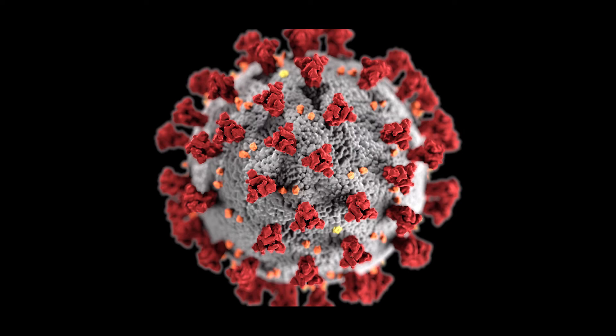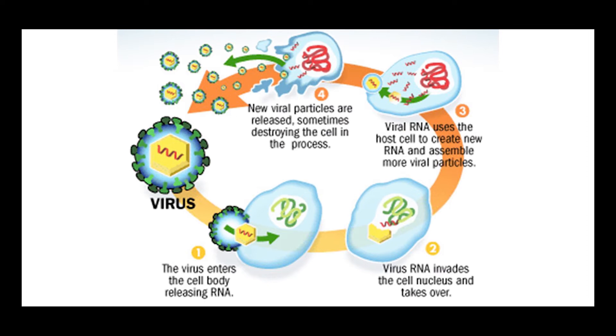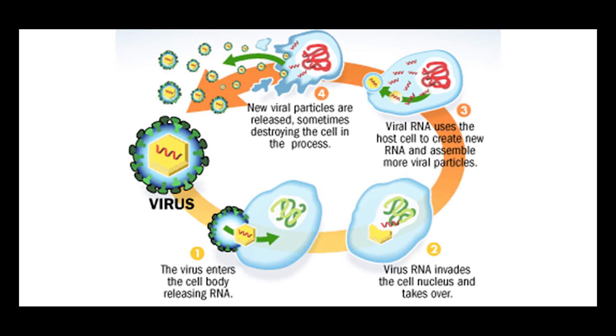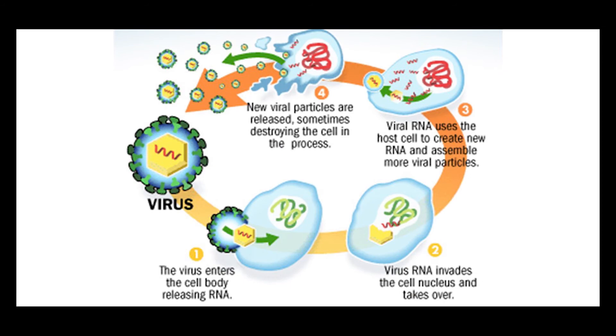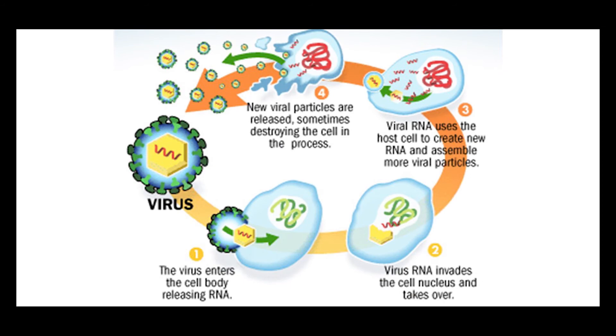Viruses like the SARS-CoV-2, which causes COVID-19, have surface proteins that help them bind to the surface receptors on the host cell, with which they can gain entry into the cell. Once inside the host cell, the virus hacks into the cellular machinery and uses it to manufacture its own components, which are then assembled into hundreds of new virus particles. These assembled virus particles emerge out of the host cell, ultimately killing it. Once out, these viruses look for new host cells to infect, and the cycle repeats all over again.